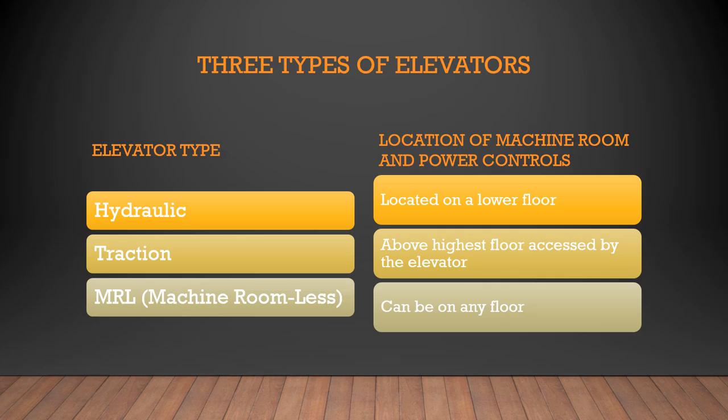There are three types of elevators: hydraulic, traction, and MRL or machine roomless. The important part is to understand the location of the elevator machine room and the power shutoffs. For hydraulic elevators, the machine room is on a lower floor next to the elevator shaftway. For traction elevators, the power shutoffs are in a machine room above the elevator shaftway at the highest level. For MRL, because the motor is located in the shaftway itself, there's no elevator machine room, so the power shutoff is typically in an access panel near the elevator but can be located on any floor.